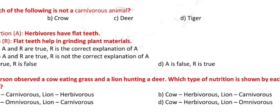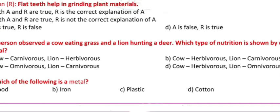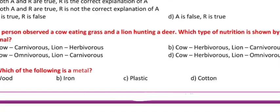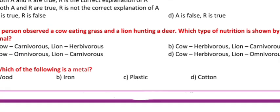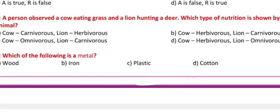Question 7: Assertion A - Herbivores have flat teeth. Reason R - Flat teeth help in grinding plant materials. a) Both A and R are true, R is the correct explanation of A. b) Both A and R are true, R is not the correct explanation of A. c) A is true, R is false. d) A is false, R is true.